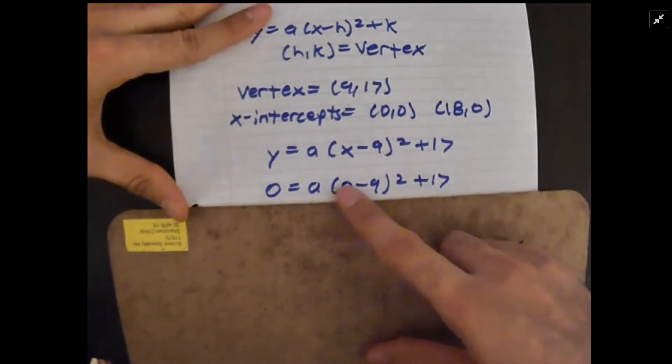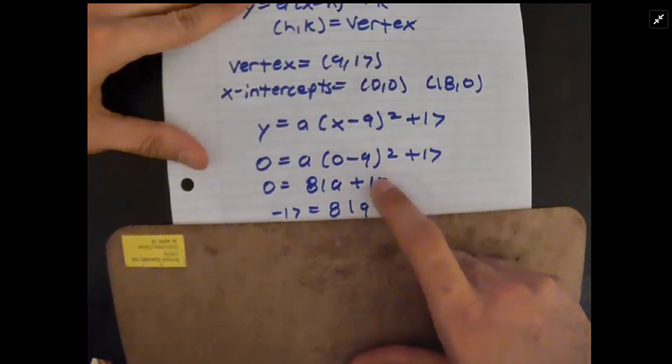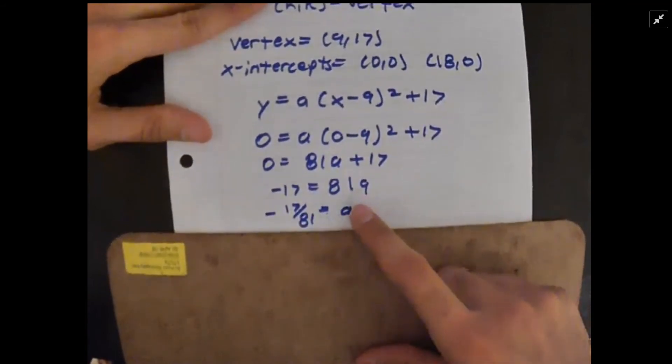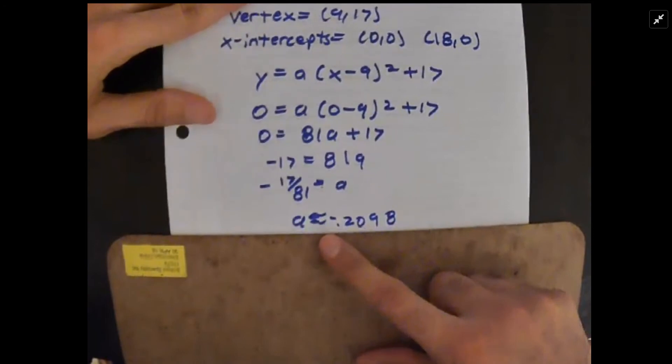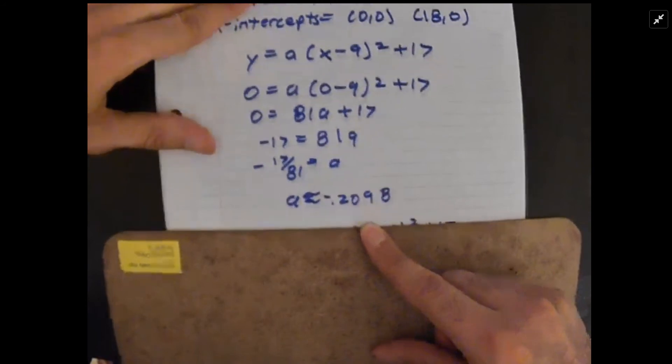So if we go here: 0 = a(0 - 9)² + 17. Solving for a, you can see the steps here. I multiplied this negative 9 by itself, so 81a + 17. Put 17 on the other side, and then divided both sides by 81, and you get a = -17/81 or -0.2098.